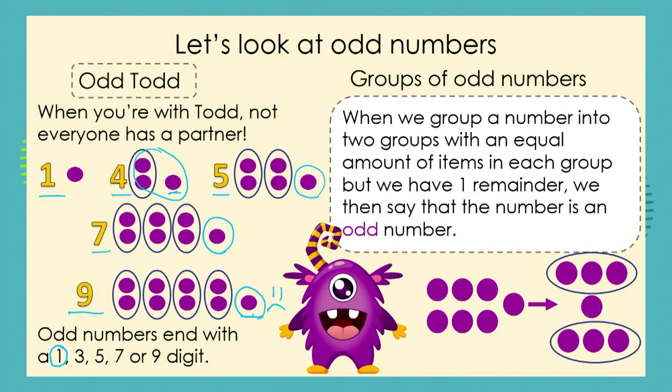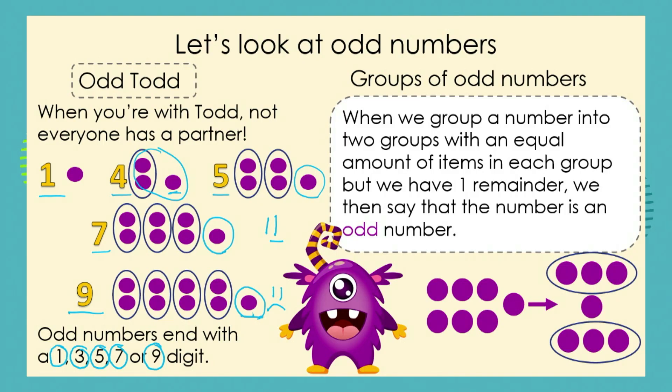When looking at odd numbers, grade ones, we need to remember that odd numbers can end in digit one, digit three, digit five, digit seven, or digit nine. So for example, if we have the number 11 — is it going to be an odd or an even number? Fantastic, it is going to be an odd number — because the number ends in the digit one. So remember what Odd Todd said: if a number ends in one, three, five, seven, or nine, these digits tell us that it is an odd number.